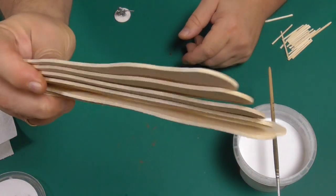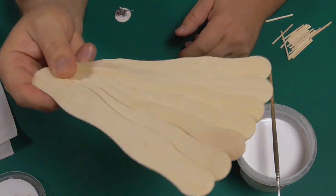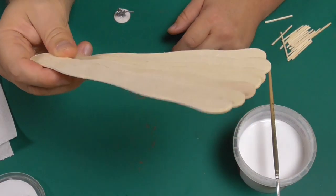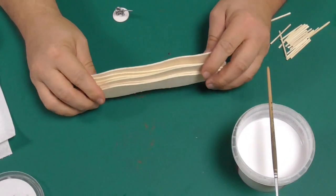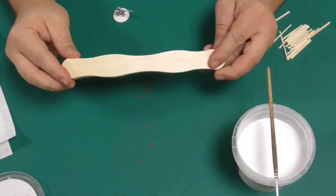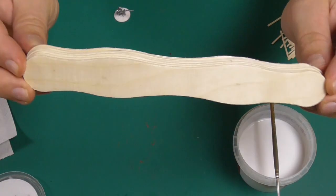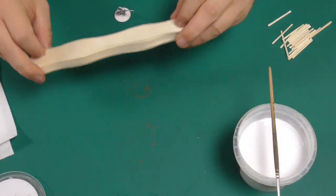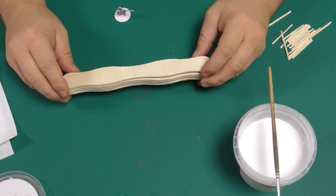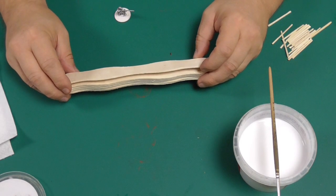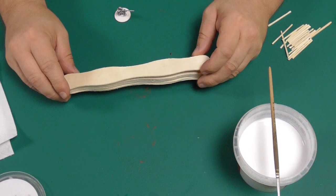I have here some Jumbo craft sticks. These are 8 inches long, so 20 centimeters, and they are waved on the outside so no straight edges.